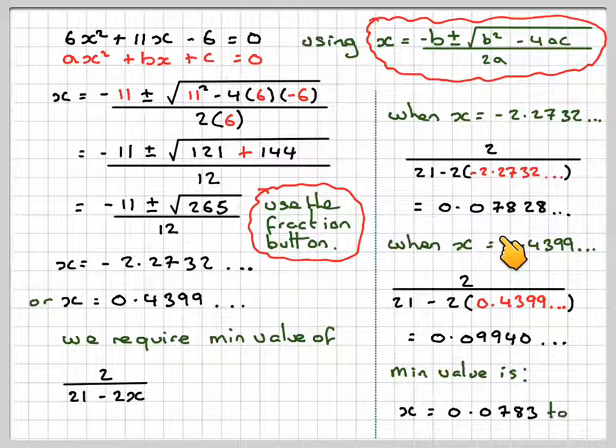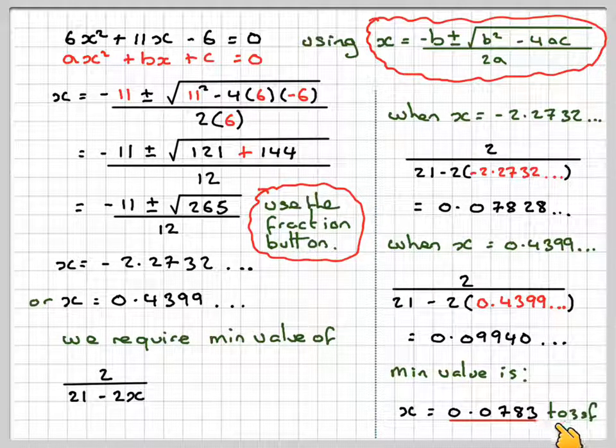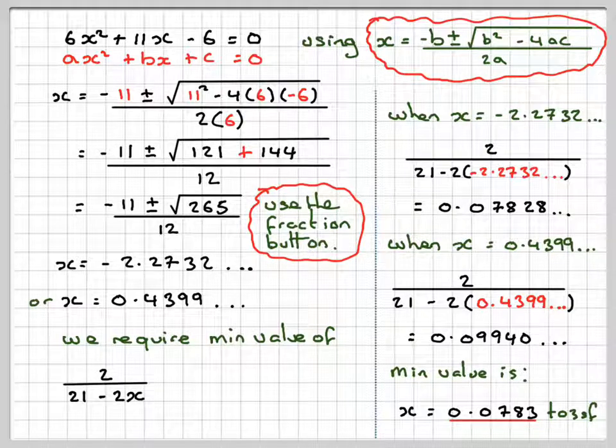So the minimum value is going to be this one. So the minimum value, now we can round it off to three significant figures, is 0.0783 to three significant figures.